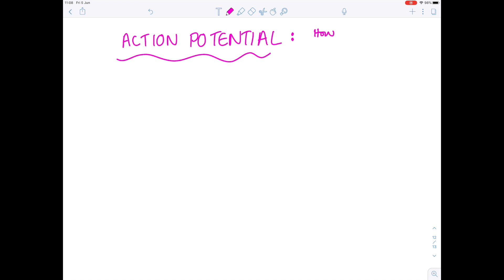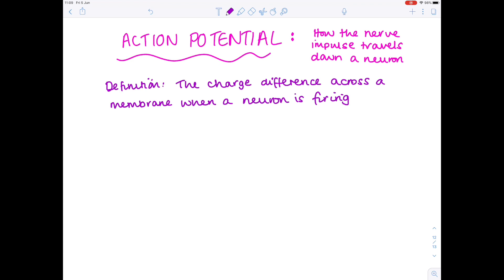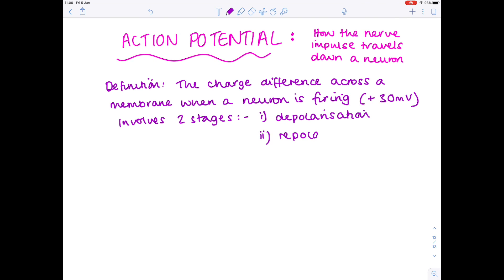Now let's consider the action potential, which is how the nerve impulse travels down a neuron. The action potential is the charge difference across the membrane when a neuron is firing. It involves two stages: depolarization and repolarization.